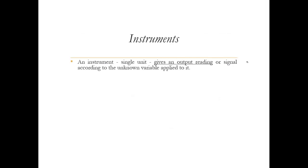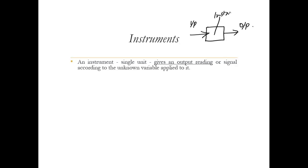An instrument consists of a single unit which can give us an output reading or signal according to the unknown variable applied to it. In simple cases it could be a black box — we have some input variable and it gives us some output variable accordingly.